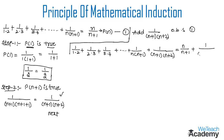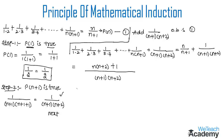Now let us simplify the RHS. Taking (n+1)(n+2) as the LCM, the numerator becomes n(n+2) + 1, all over (n+1)(n+2). Expanding the numerator gives n² + 2n + 1, which can be written as (n+1)².